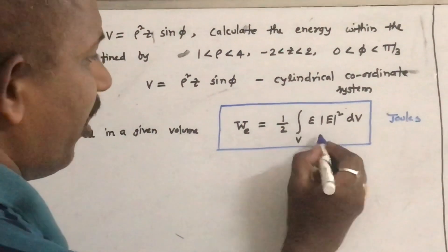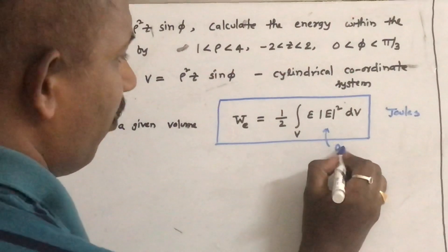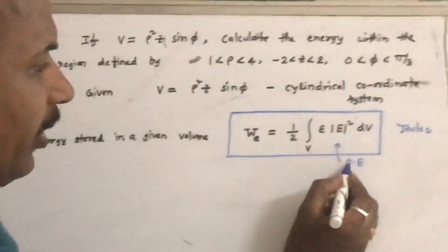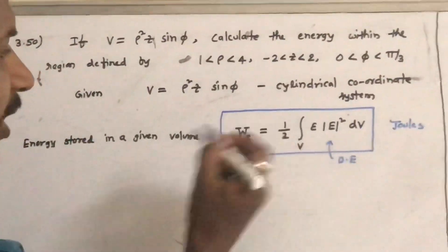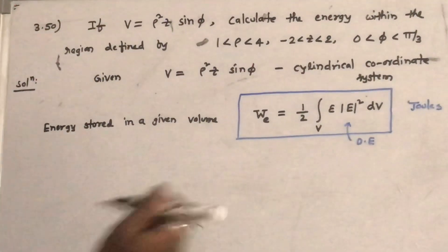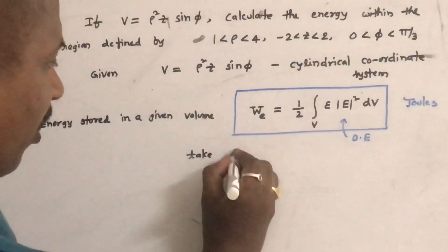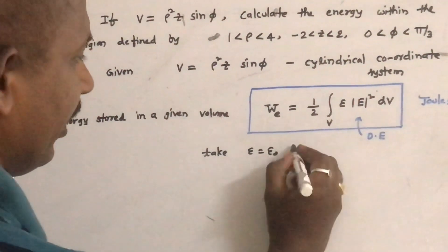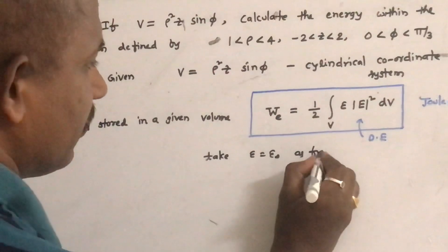The actual formula involves D dot E. If you substitute D = ε₀ E, it will become ε E² dv. Since the medium is not given, take epsilon as epsilon-naught and assume the medium is free space.